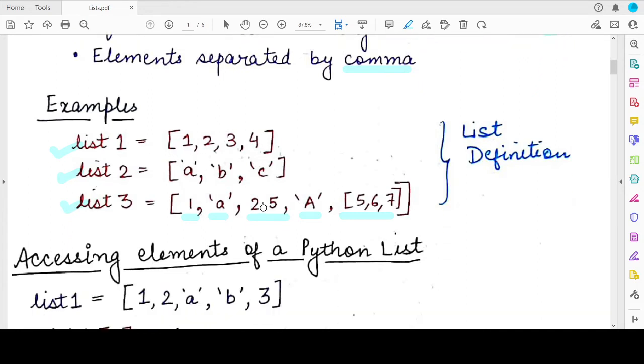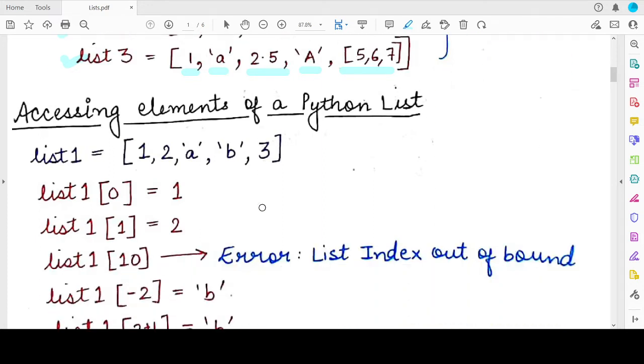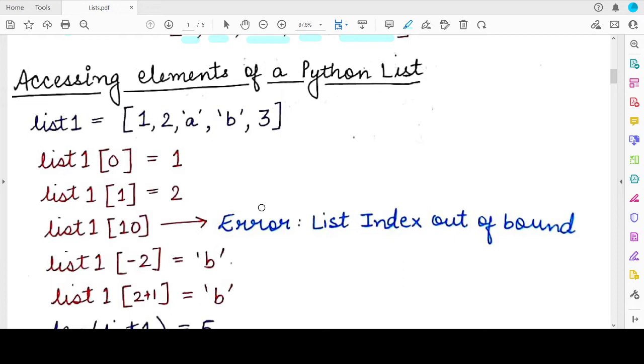Now, once you have defined the list, you need to know how to access the elements of a list. So it is very simple. Once you have studied accessing different characters present in a string, as we have discussed in the previous videos, you will have no difficulty in accessing the elements of a Python list. So the concept remains the same. Each element is assigned an index value and the index starts from 0 when you proceed from left to right. So this first element will have the index 0, the second element will have the index 1, 2, 3, and the last element in this list will have the index 4.